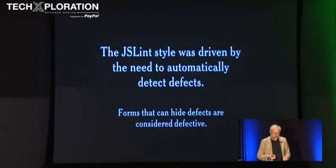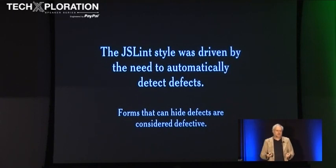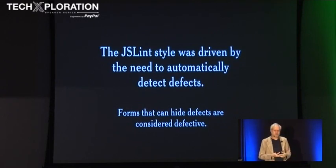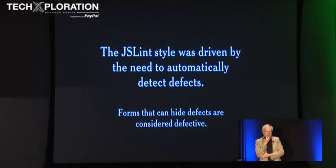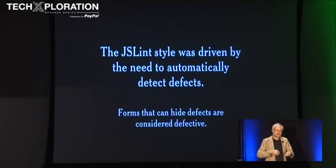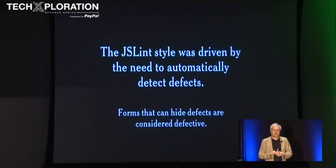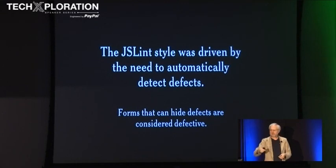The JSLint style was driven by the need to automatically detect defects — forms that can hide defects are considered defective. Early on I spent a lot of time on comp.lang.javascript, where there was a constant stream of people saying their program doesn't work. I'd take their program, put it into JSLint, and sometimes it would find the problem, sometimes it couldn't. JSLint has to work statically, and with ambiguous forms it's difficult to tell if they're being used correctly. Eventually I had the epiphany: if they're using one of those ambiguous forms, just say stop doing that first — and then I can tell you a lot more about what's going on.